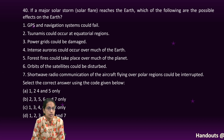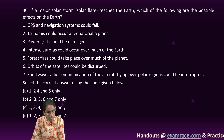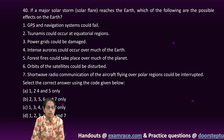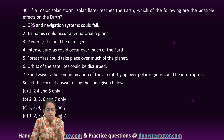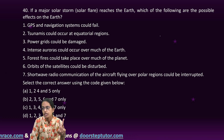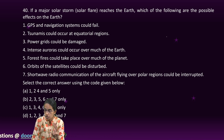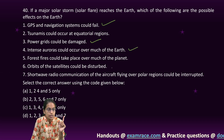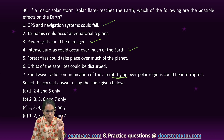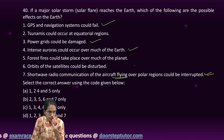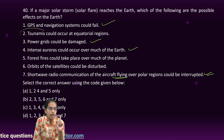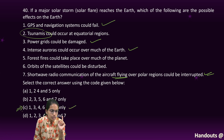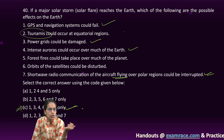The next question covers solar flares — an extremely important topic from a recent lecture. Key effects include: GPS network disruption, power grid failure, radio communication failure, aircraft communication breakdown, and auroras. Importantly, tsunamis are not a result of solar flares. Since all other choices include tsunami as an effect, only option C — which excludes tsunami — can be the correct choice.